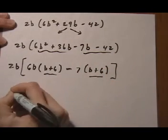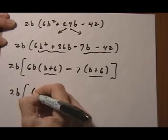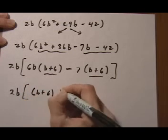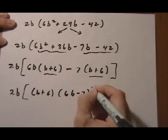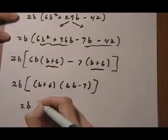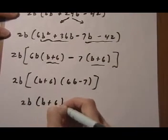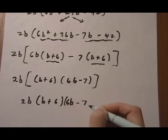Common binomial comes out as a common factor. So we get b plus 6. Left over is 6b minus 7. And to rewrite the final answer we can get rid of those brackets. 2b times times b plus 6 times 6b take away 7.